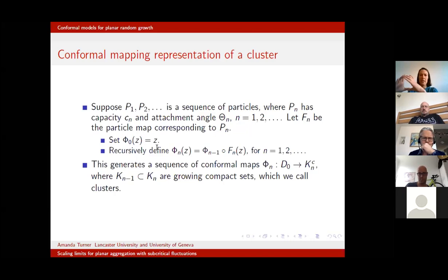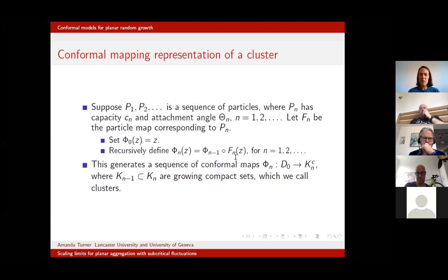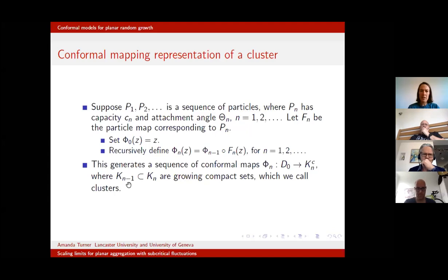We start just with the identity mapping, which tells us our cluster is empty. Once we have a mapping corresponding to n−1 particles, we construct our nth mapping by precomposing by the map corresponding to the nth particle. This generates a sequence of mappings taking the exterior unit disc to the exterior of a cluster of n particles, with the property that the (n−1)-cluster is a strict subset of the nth cluster. These clusters are growing compact sets.